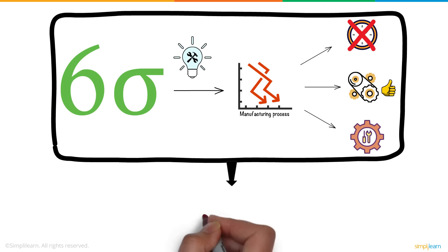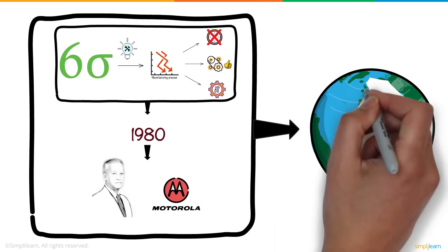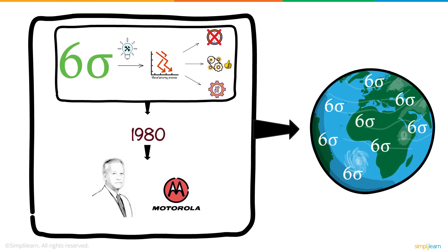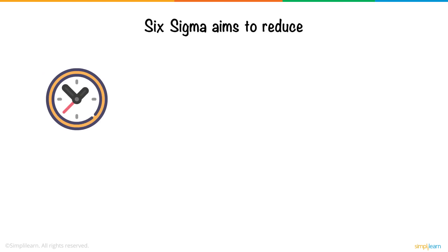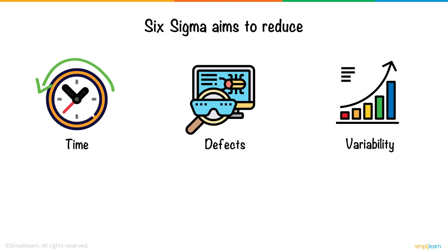The concept was introduced in 1980 by Bill Smith, while working for Motorola. Since then, Six Sigma has seen worldwide adoption. Six Sigma aims to reduce the time, defects, and variability experienced by processes in an organization.